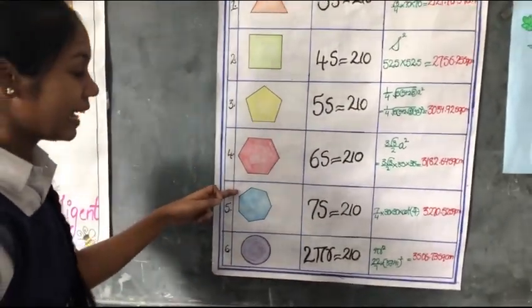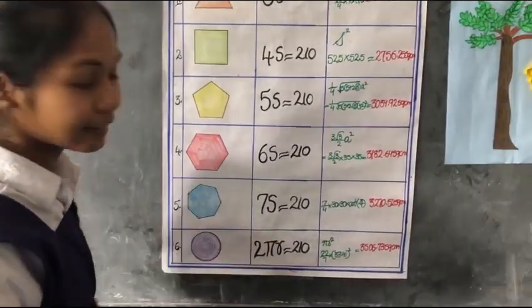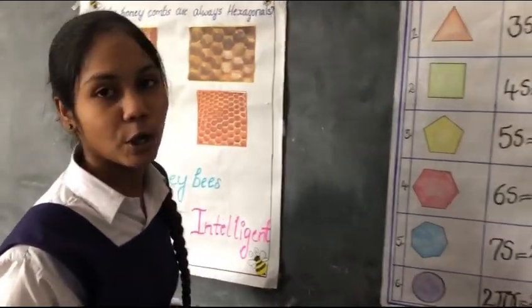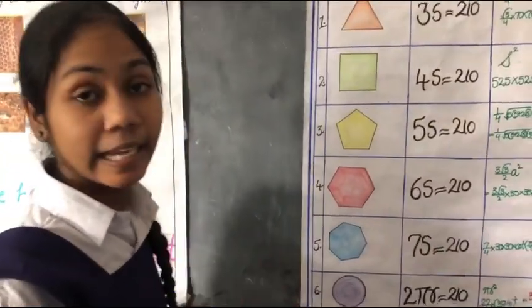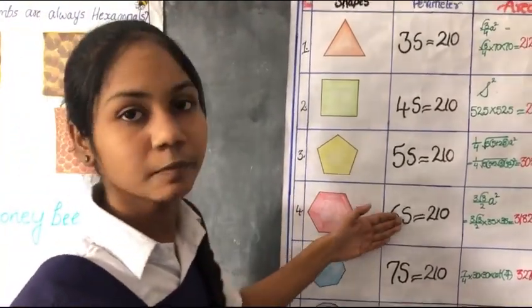Similarly, if we consider nanagon, octagon, septagon, their areas are more than hexagon with the same perimeter. When the areas are increased with the number of sides,